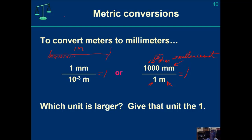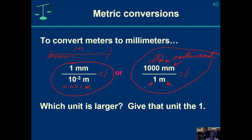I could also say 0.001 meters is equal to one millimeter — this is a true statement and just another way to write the same value. But giving the larger unit the one is simply an easier value to work with. Give the larger unit the one and you don't have to write the smaller unit with a negative exponent or a decimal place.